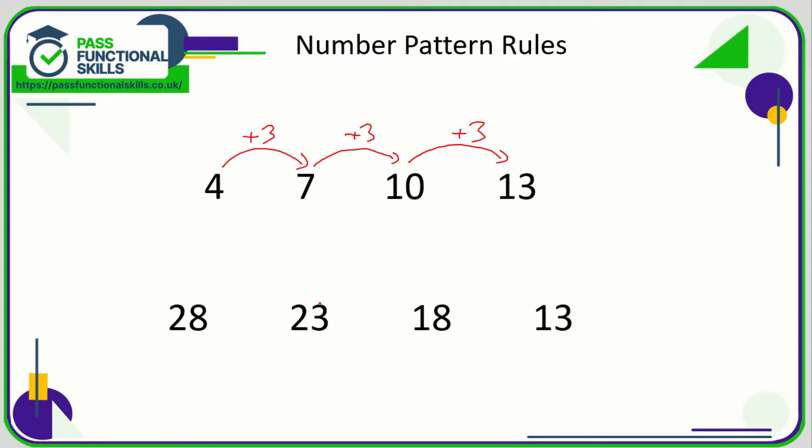This sequence we're going down, so we need to see this in terms of subtraction. 28 down to 23, that's minus 5. 23 to 18 is minus 5, and 18 to 13 is also minus 5. So here the sequence is the next number is generated by subtracting 5 from the previous number.